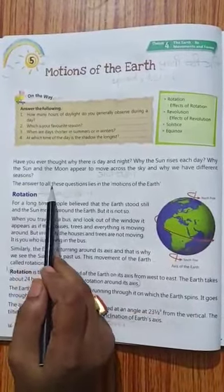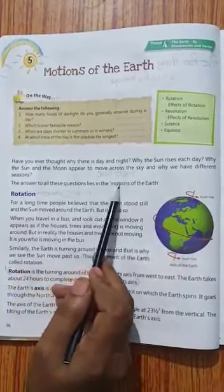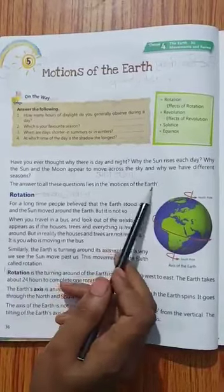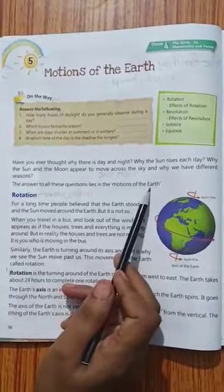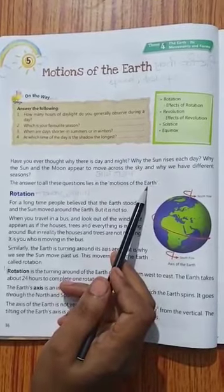The answer to all these questions lies in the motion of the earth. Why does this happen? Because of motion of the earth, prithvi ki gati ke karen. Now, next is rotation.